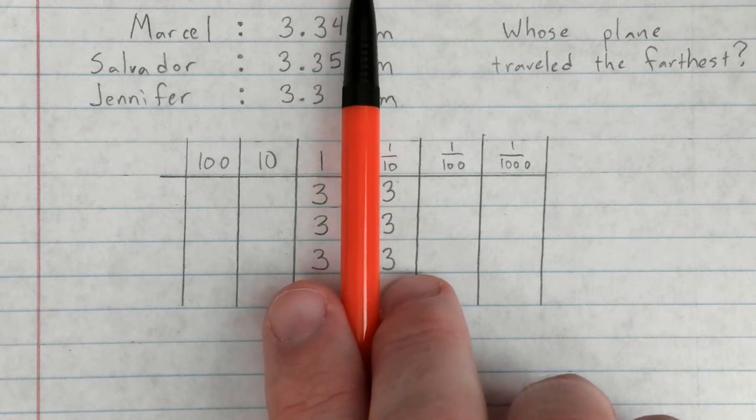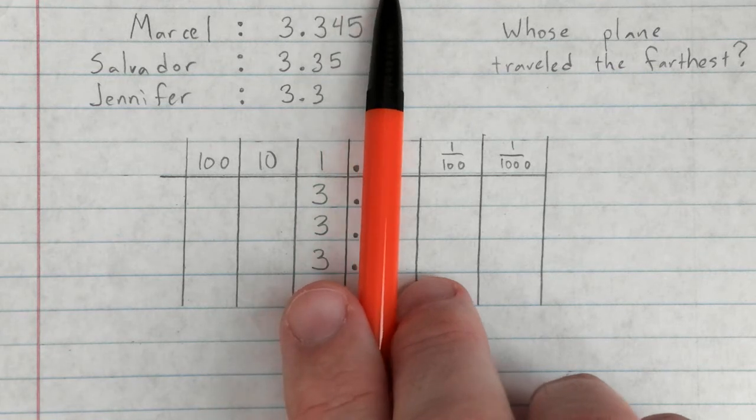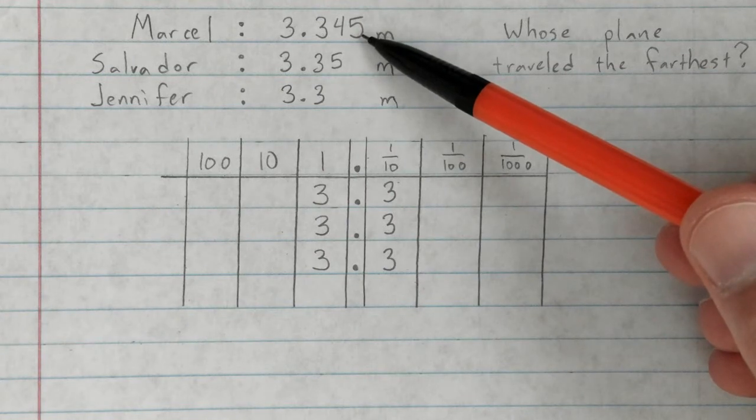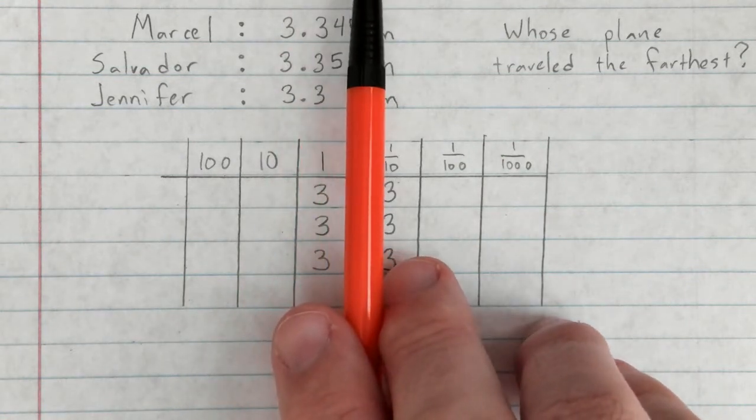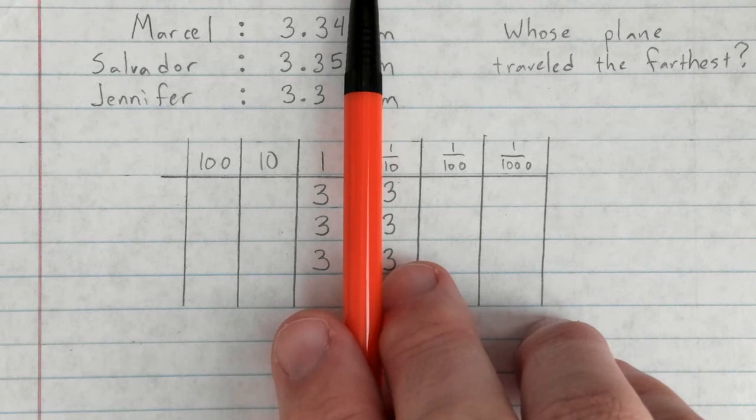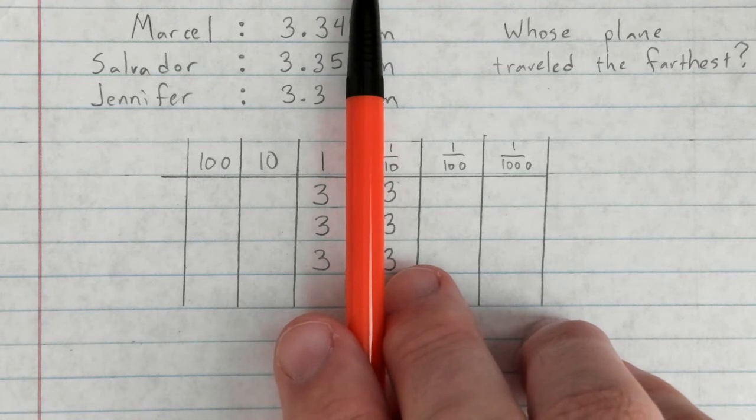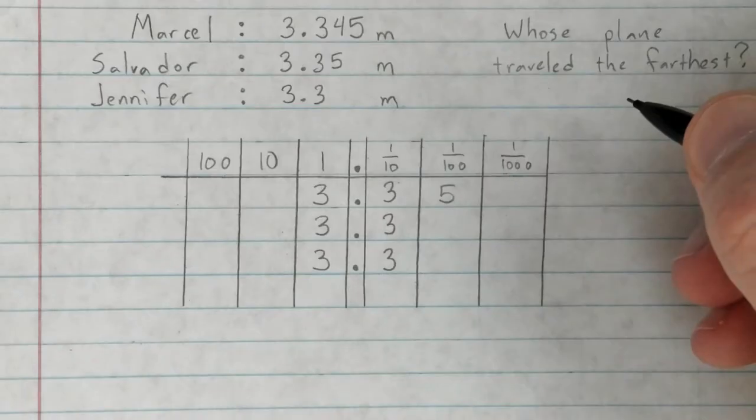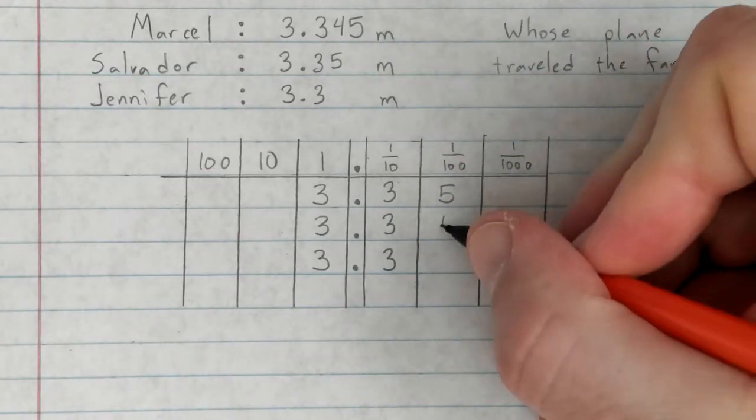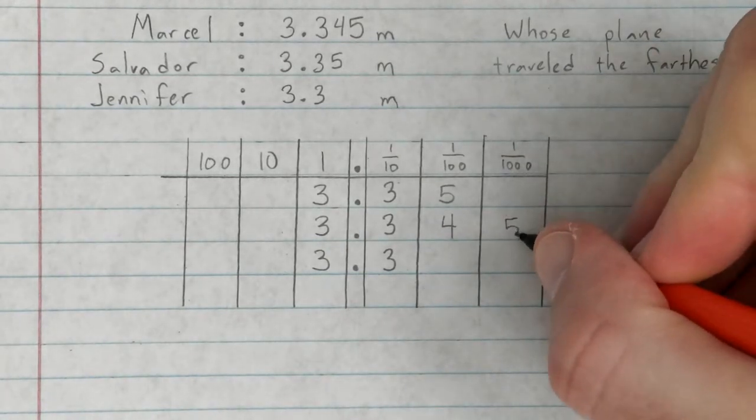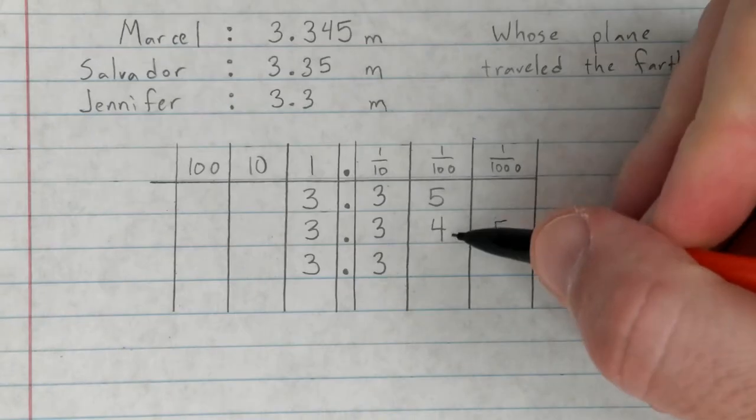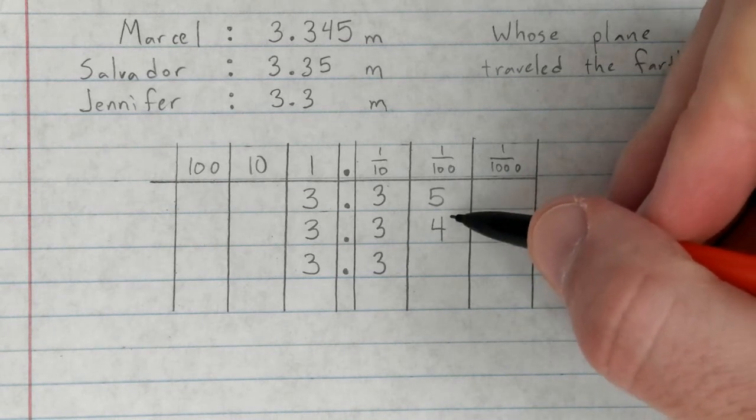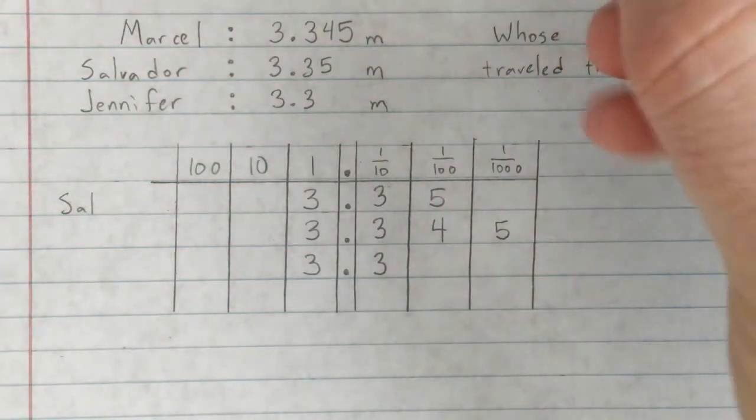They all have identical ones and tenths. Up until that point they're the same. It's only when we get here that we see a difference. Now obviously Marcel has a measurement out to the thousandth place as well, but we have to be careful, because as soon as we get to something different, then we're really done. We look and see which one is bigger: four or five, Marcel or Salvador? Well, Salvador's got five.